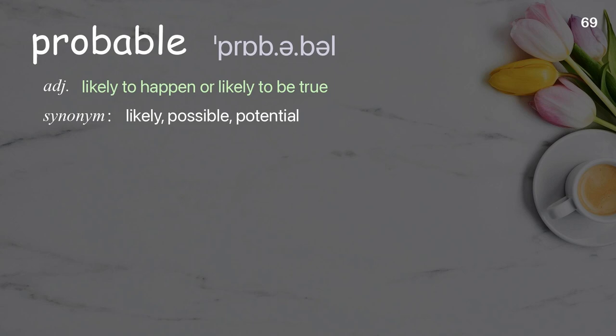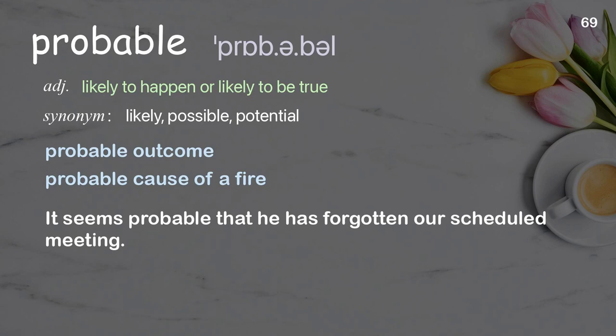Probable: likely to happen or likely to be true. Examples: probable outcome; probable cause of a fire. It seems probable that he has forgotten our scheduled meeting.